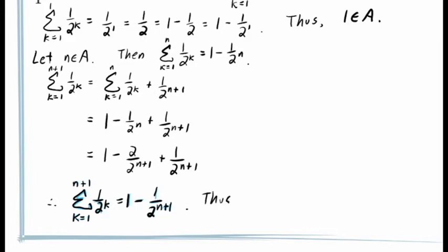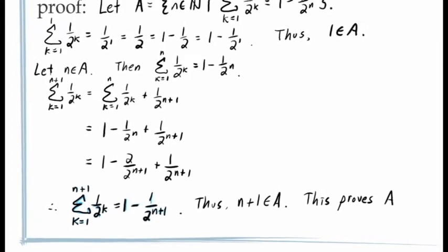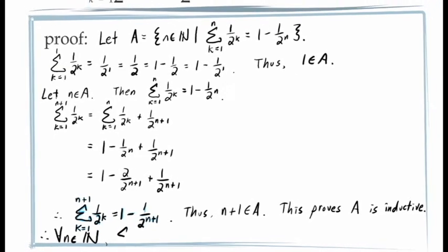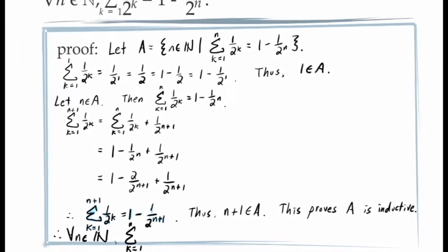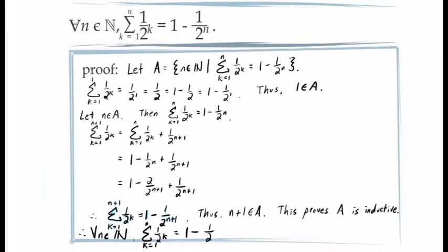We've now shown that n plus 1 is an element in the set A, which means that A is an inductive set. This proves that all natural numbers are in the set A, and so our formula holds for all natural number values of n.